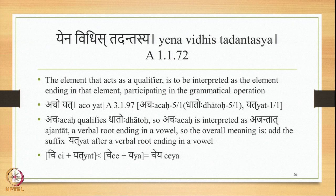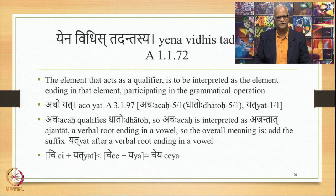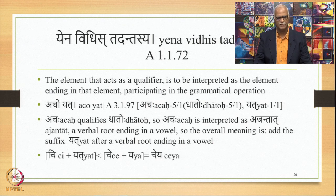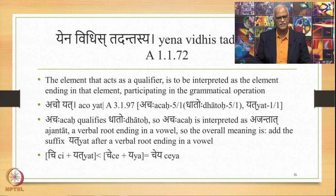Another important Paribhasha is Yenavidhishtadantasya 1.1.72, which means the element that acts as a qualifier is to be interpreted as the element ending in that element, participating in the grammatical operation. For example, Sutra 3.1.97 Acho Yath: Achaha is 5.1, Dhatoho is 5.1, and Yath is 1.1. Since Achaha qualifies Dhatoho, Achaha is interpreted as Ajantat — a verbal root ending in a vowel. So the overall meaning is: add the suffix Yath after a verbal root ending in a vowel. We have verbal root Qi, which ends in a vowel; adding Yath gives Qi + Yath → Che + Yeh, and the final form Cheyeh.